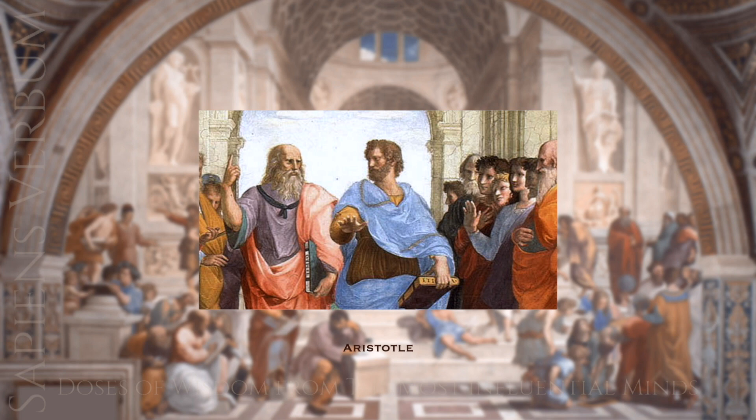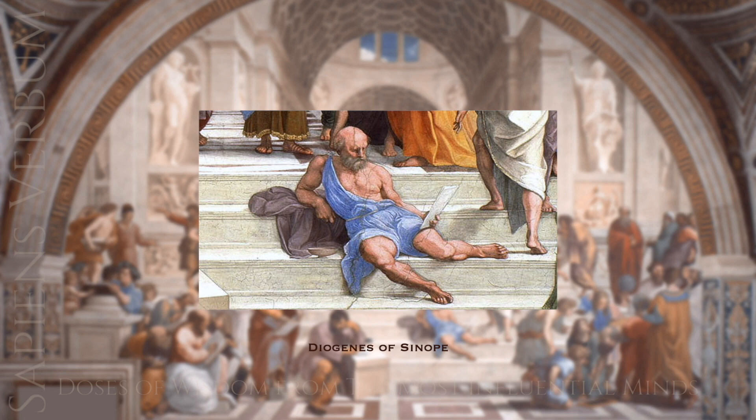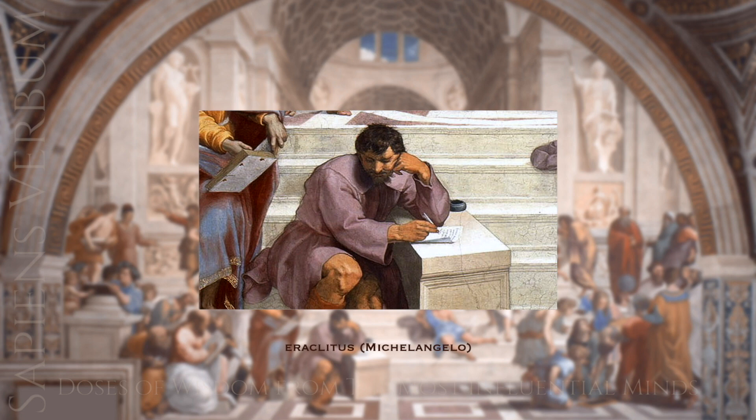Diogenes was a philosopher known for his unconventional behavior and rejection of social norms. He famously lived in a barrel and believed in living a simple, self-sufficient life. Heraclitus was a philosopher who believed that everything is in a constant state of change, known for his cryptic statements such as 'you cannot step into the same river twice.'